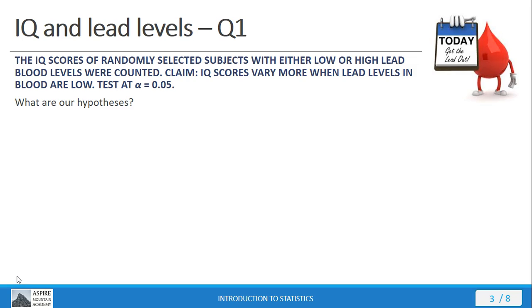The first question we're asked is about our hypotheses, and so the first thing we do when constructing that is think about the claim that's being made. Here the claim is that the IQ scores vary more with the low lead levels than with the high lead levels.